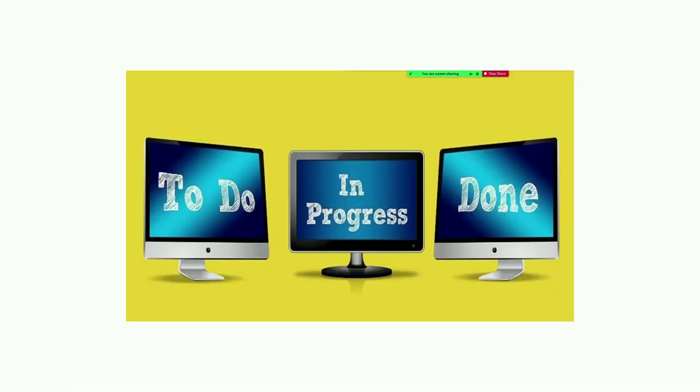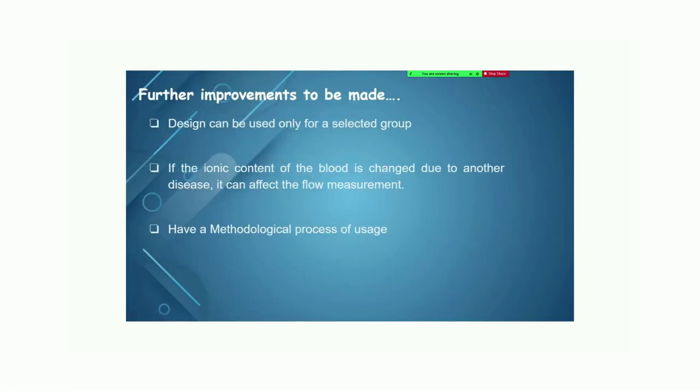To do this process in efficient and improved manner, these are our suggestions. This design will work only for selected groups but we can improve it for all people. And also any content of our blood varies due to another disease. So, we can't get the correct reading. We are trying to improve this tool to overcome this problem and this is our methodological process. The limb must be horizontal when the reading is taken. So, we are trying to solve this problem and try to develop this as a portable device.